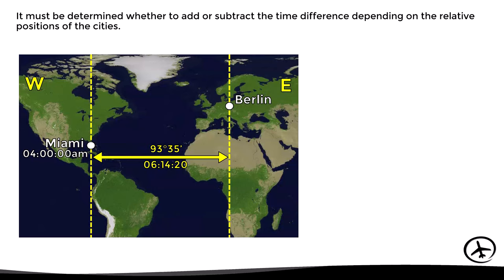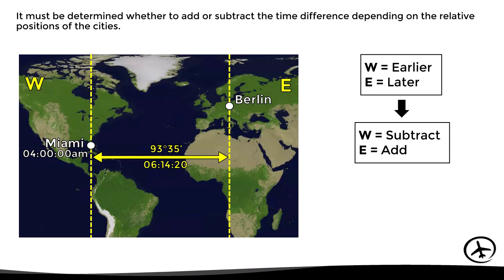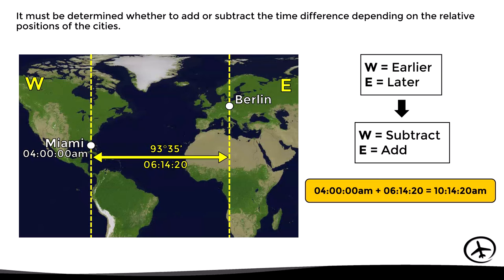Now that we know the difference in solar time, we must determine whether to add or subtract it based on relative positions. In all places to the east it will be later, and in all places to the west it will be earlier. If the city is to the west we subtract; if it is to the east we add. Since Berlin is to the east of Miami, we add the time difference, giving a solar time in Berlin of 10:14:20 a.m.